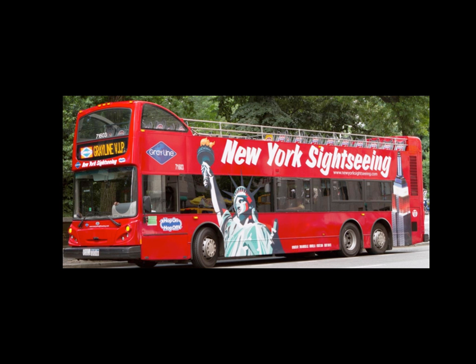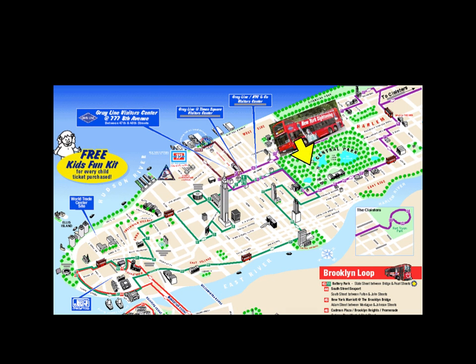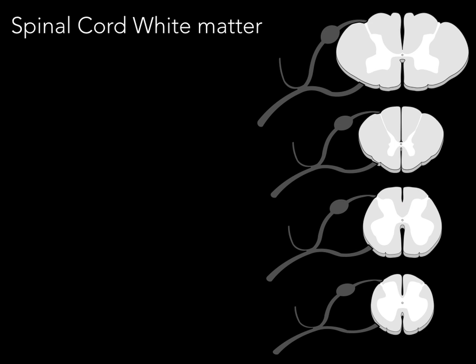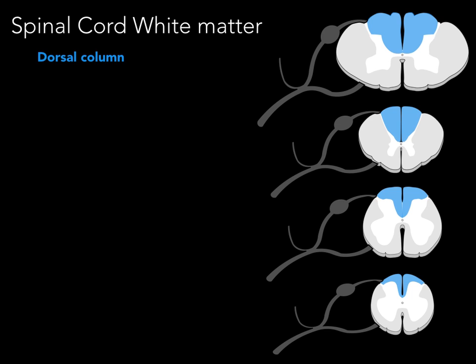What are the primary white matter tracts? I'll introduce these now, similar to a New York City tour bus giving you a preview of the Empire State Building before covering it in detail later. I'm going to briefly introduce some specific tracts of white matter in the spinal cord that future lectures will cover in more detail — blue, green, and red specific tracts that ascend or descend and have strong clinical significance, especially when it comes to board exams.